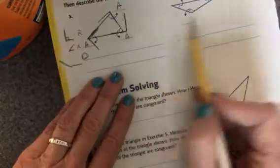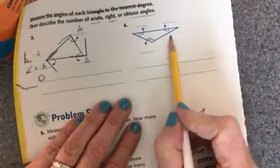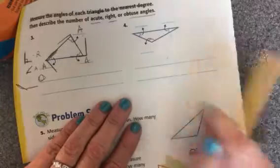And that's all that you need to do on three and four. So go ahead and do the same thing on four, if it's acute, right, or obtuse angle.